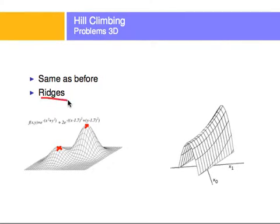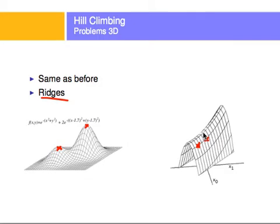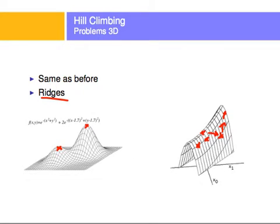We can also have ridges, which is a function that grows not directly on one axis or the other, but in a combination of axes. What happens is, say we're here and we want to maximize — if we move in the x direction, we might get something a little higher. But the algorithm also tells us that moving in the upward direction gets even higher. Then we keep moving up and there's no solution, so we have to move to the side. We end up moving up the ridge, then down to the side, then up the ridge, then down to the side, and that can take forever to reach a maximum.